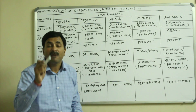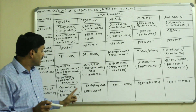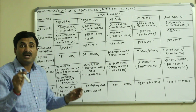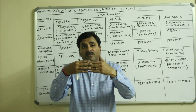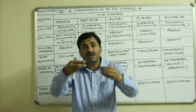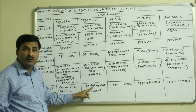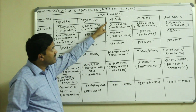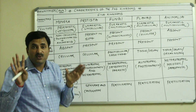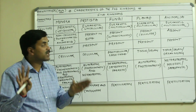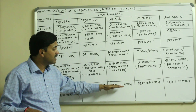Mode of reproduction: in Monera, true sexual reproduction is absent; they have genetic recombination, and conjugation is the best example — two bacterial cells come close temporarily, a conjugation tube forms between them, they exchange genetic material, and then separate. In Protista, syngamy (fusion of gametes) as well as conjugation can occur. In Fungi, Plantae, and Animalia, true sexual reproduction is present — gametes are formed, male and female gametes fuse together in fertilization, and a zygote is formed.